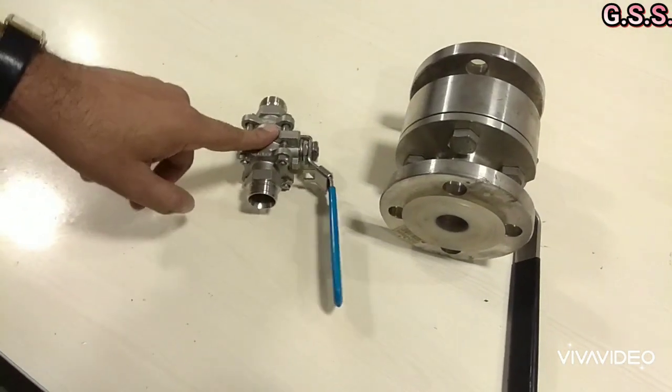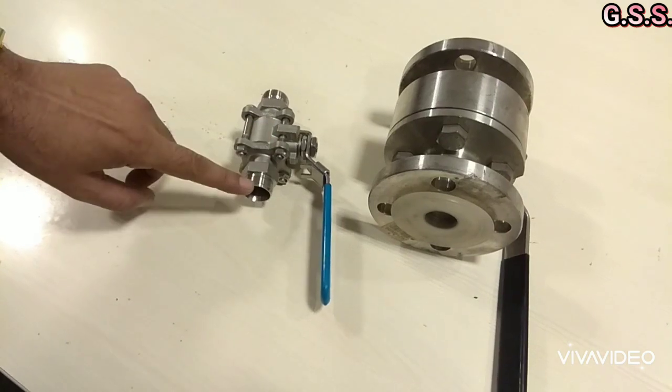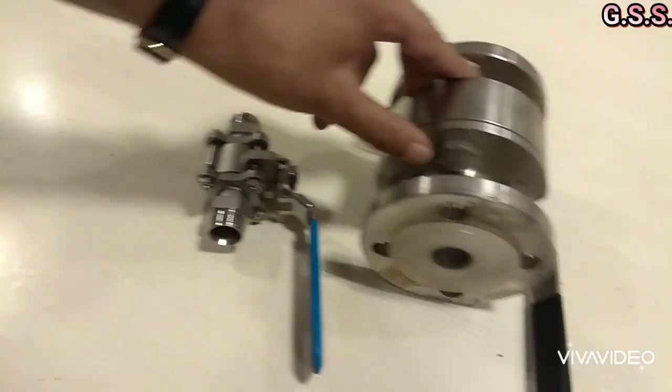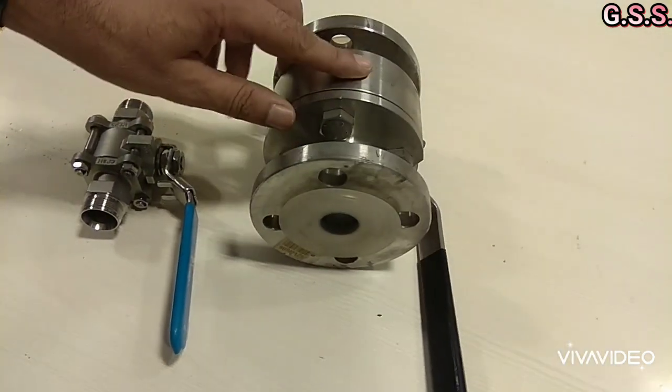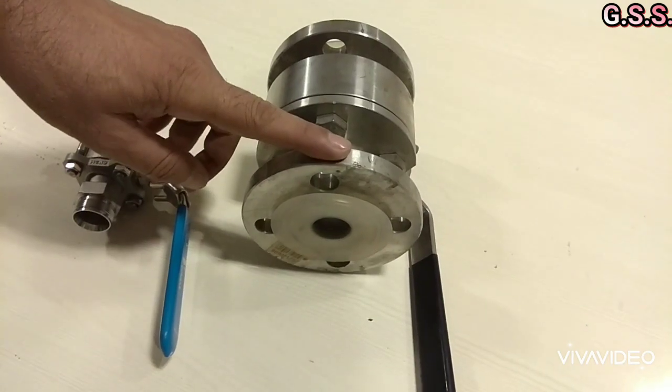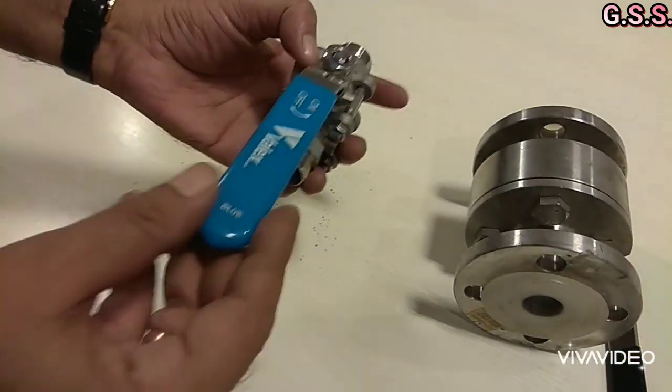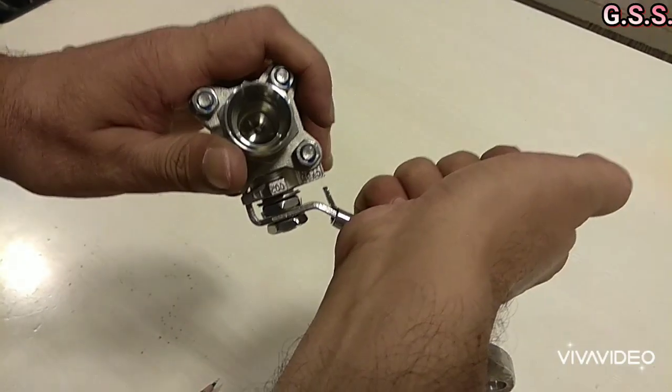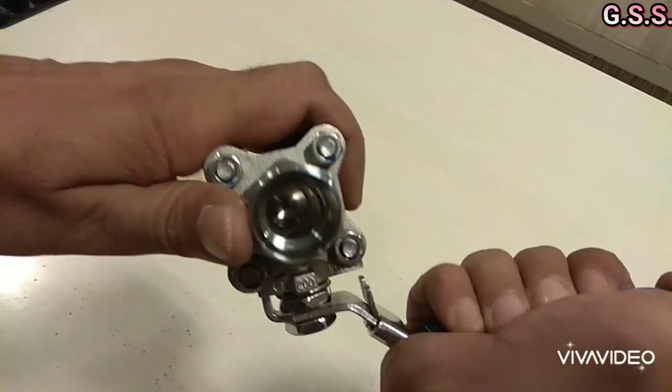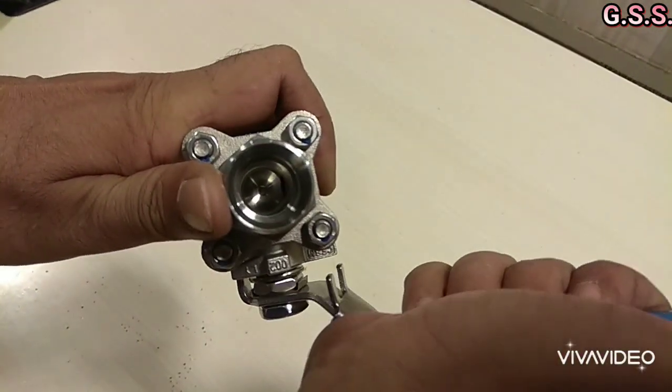This is one valve, 3/4 inch threaded end, and this is another valve, 1 inch flanged end. Both valves are lever operated quarter turn. Now the valve is in closed condition. I am opening the valve.